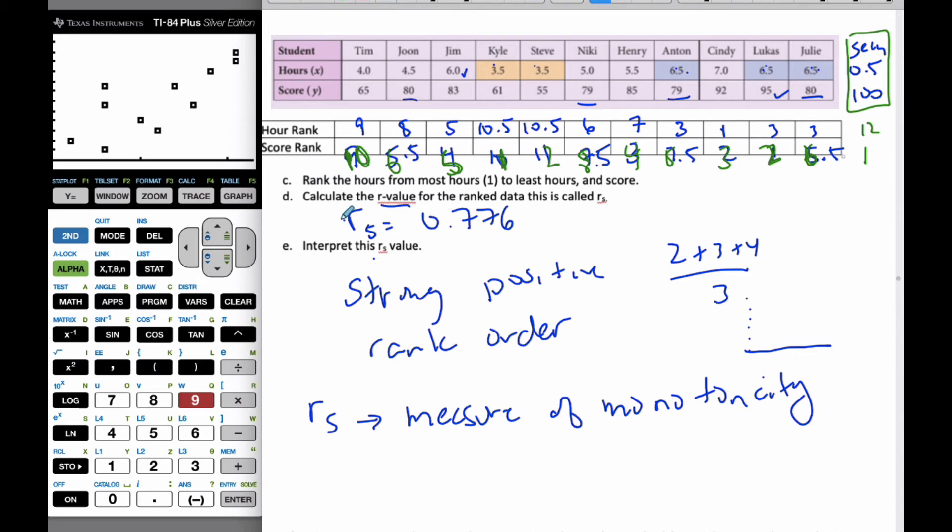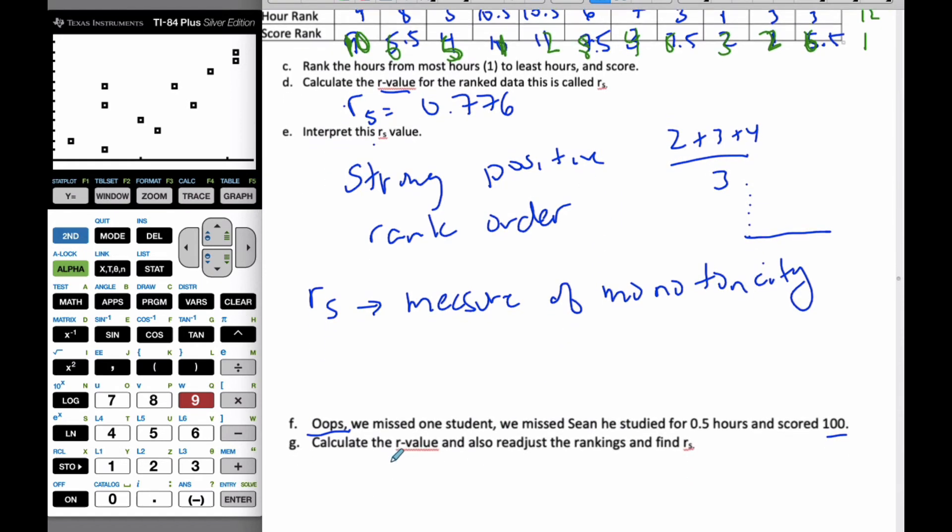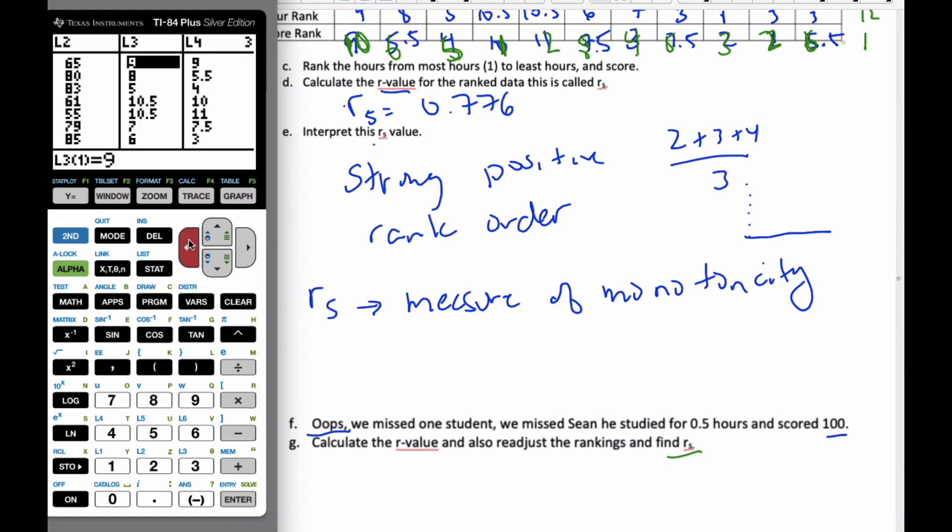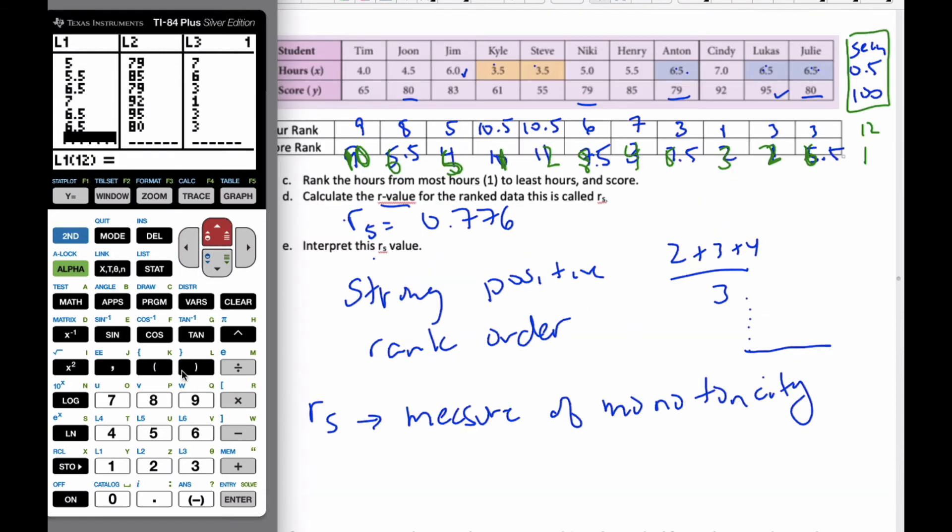I want to now find the new R value and the adjusted rank. Let's go to L1 first of all. I'm going to just add Sean's score. This is my hours, 0.5, enter. And we'll do our 100, enter.